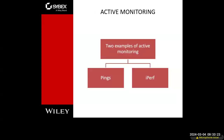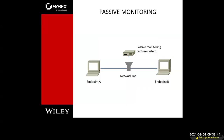Active monitoring includes examples like a ping, an SNMP query, or an SNMP trap. NetFlow is more passive. They also use the example of IPERF. Passive monitoring is where you're collecting data on an ongoing basis, like a NetFlow or a network tap, and you're going to take that information and throw it through a TCP dump, a Wireshark, or some other utility to analyze the traffic.